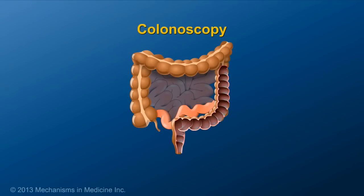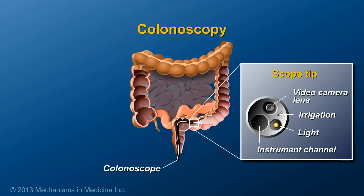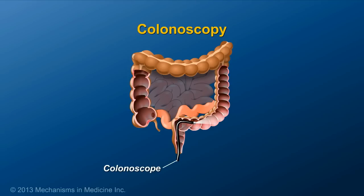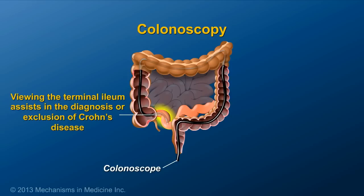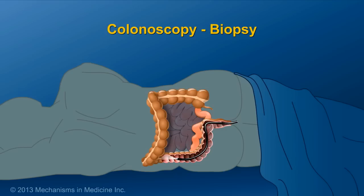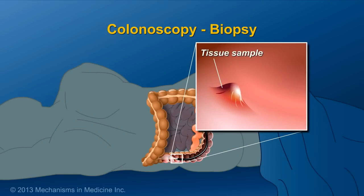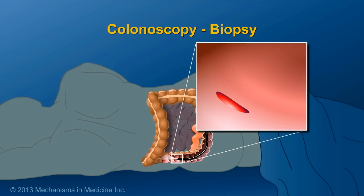A colonoscopy is an internal examination of the large intestine and last part of the small intestine using a colonoscope, a flexible tool with a small camera attached to one end. The colonoscope is inserted through the anus and into the rectum and colon, and then into the last part of the small intestine, called the ileum. Viewing the terminal ileum assists in the diagnosis or exclusion of Crohn's disease. Colonoscopy is one of the most valuable imaging tools available for the diagnosis and treatment of IBD. Small tissue samples, or biopsies, can also be done during a colonoscopy to further examine the type and extent of IBD.